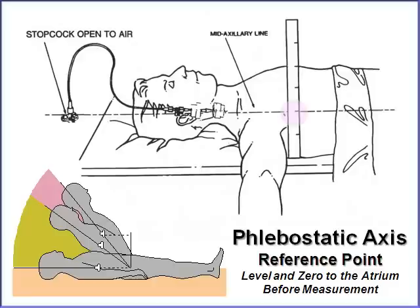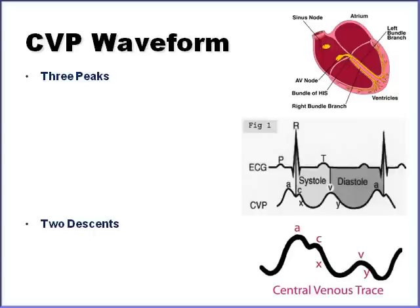Before we even tackle looking at the numbers on the monitor or interpreting the waveform, we need to make sure that the transducing system has been leveled and zeroed to the patient's right atrium — the phlebostatic axis. The phlebostatic axis is the point halfway between the patient's anterior and posterior chest at the fourth intercostal space. Then you line that up with the stopcock, the air-fluid interface, and zero it.